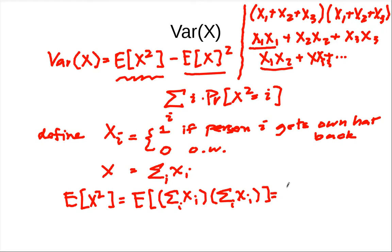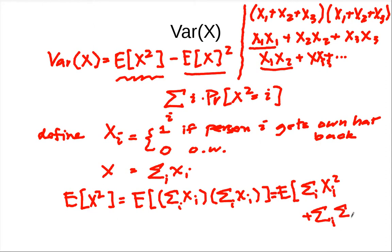So when you expand E[X²], you end up with two parts: the sum of E[Xi²] — the square terms — and the sum over i and j not equal to i of E[Xi Xj] — the cross-terms. You can use linearity of expectation to split these two terms, and we will analyze them separately in the next slide.